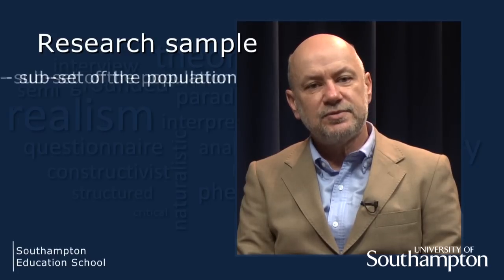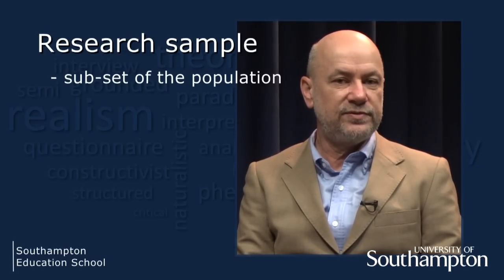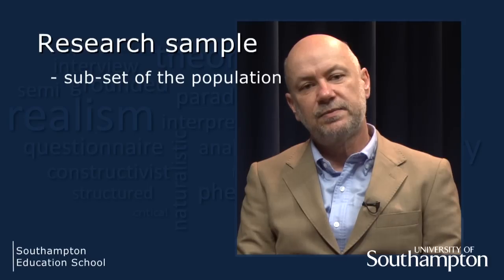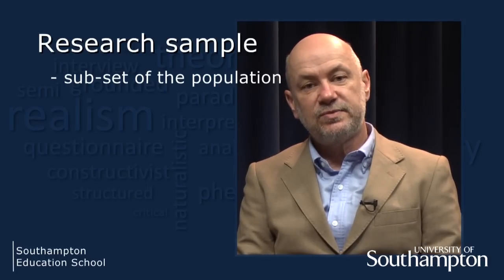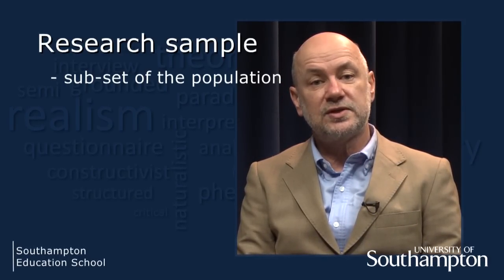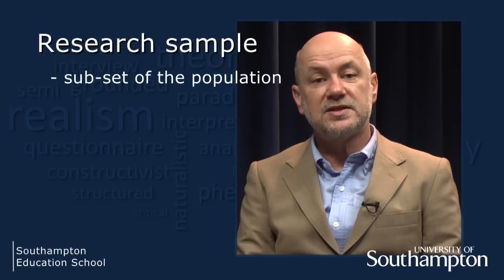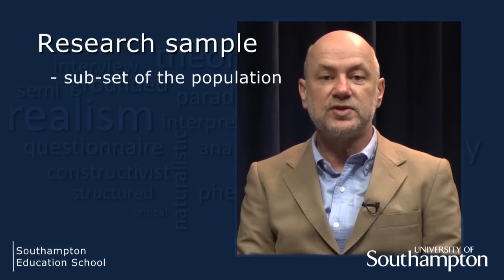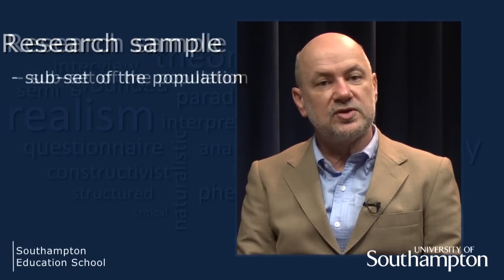A research population can also be quite small. You could be exploring the experience of students with learning disabilities who joined the University of Southampton Army Cadet Unit. The research sample is a subset of the population that you choose to involve directly in your study. In the case of my iPad study, there are nearly 20,000 students at this university, so I need to somehow select a more manageable size group. I would call this subgroup my research sample.